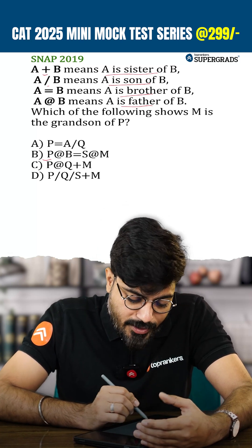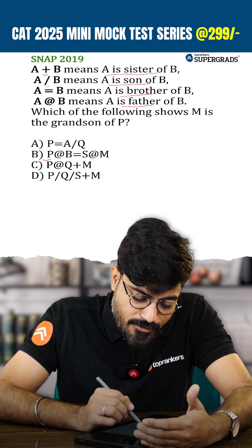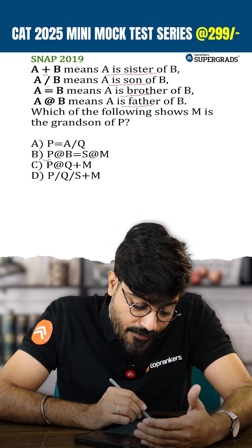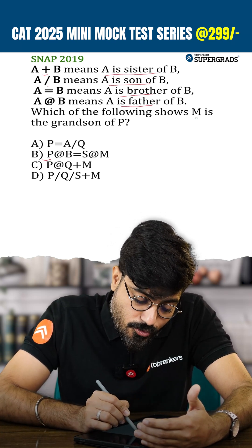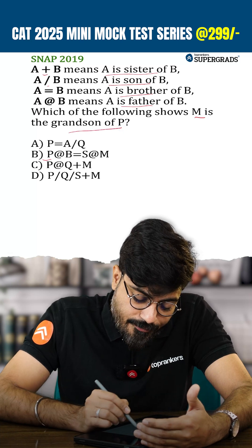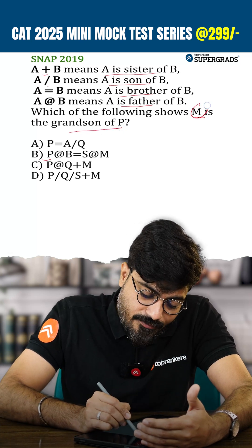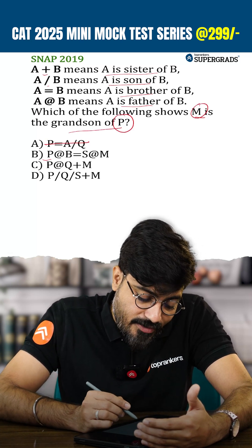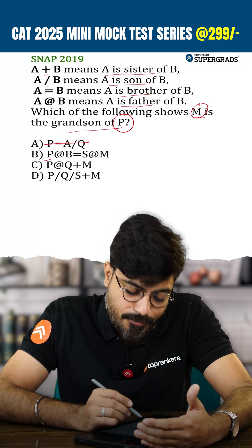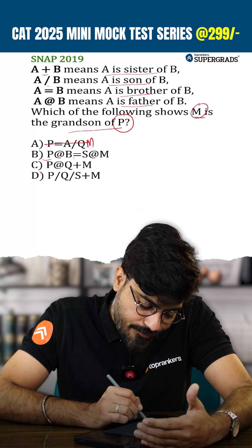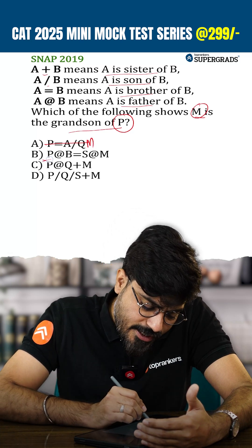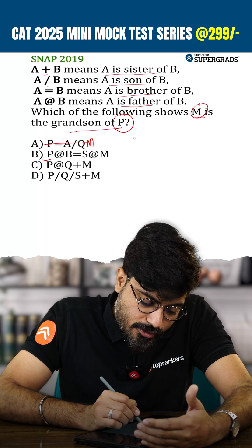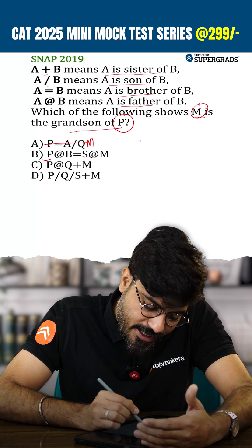The question asks: which of the following shows that M is the grandson of P? Since we have to relate M and P, option A can never be the correct answer because M is not given there. Let's go to option B.